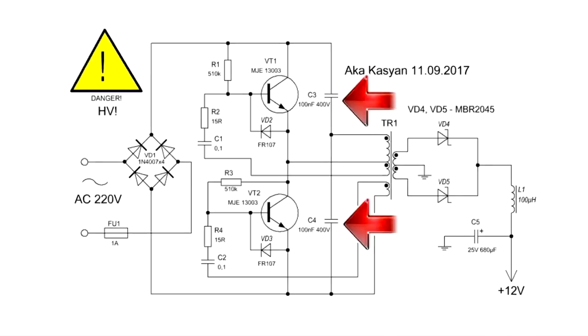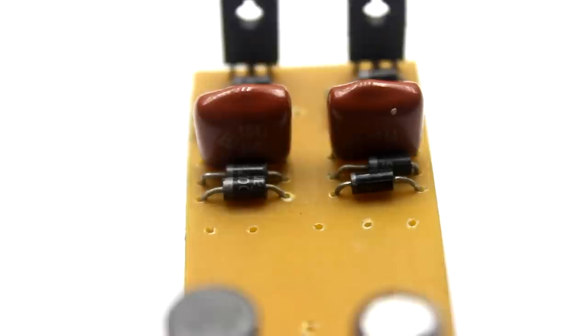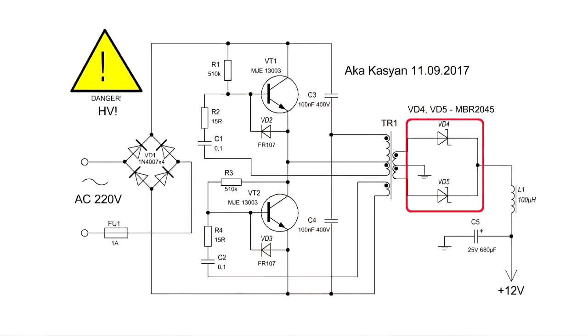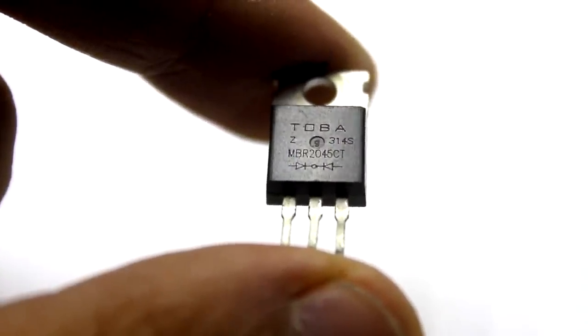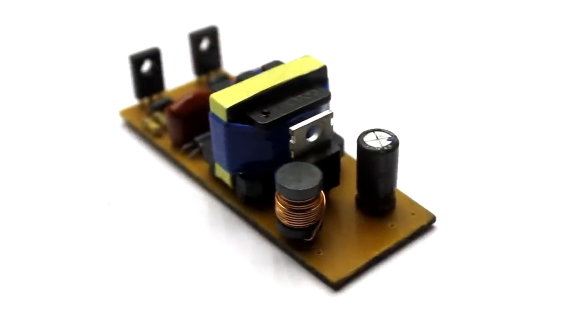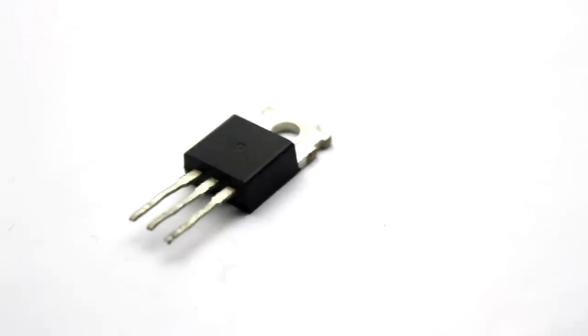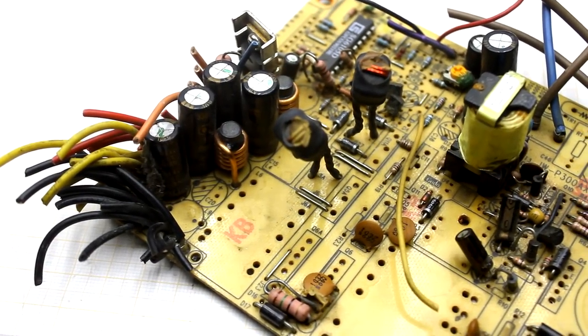The half-bridge capacitors must be rated for a voltage of at least 250V, preferably 400V. At the output we have a half-bridge rectifier. A double Schottky diode MBR2045 is used. Such a diode has multiple current reserves. You can use diodes for about 2A, but it's easier to find our option if you have non-working computer power supplies.